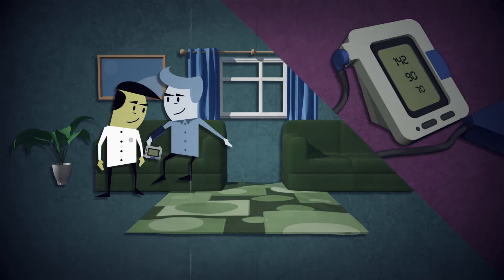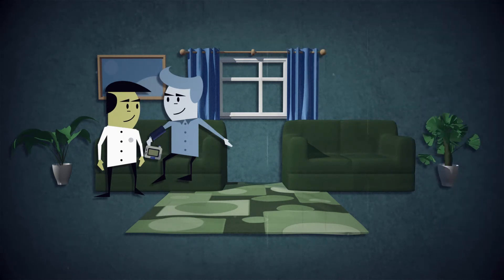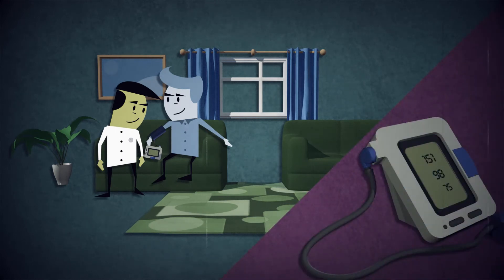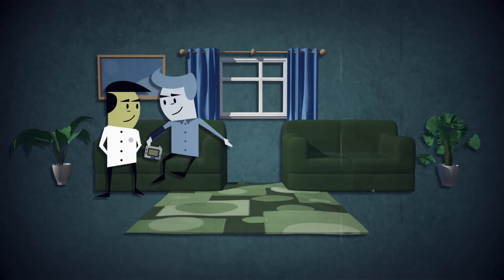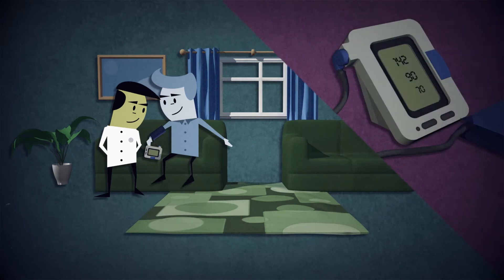If the blood pressure reading is 140 over 90 mm of mercury or higher, take a second reading during the consultation. If the second measurement is substantially different from the first one, take a third measurement. Use the lower of the last two measurements as the clinic blood pressure reading.